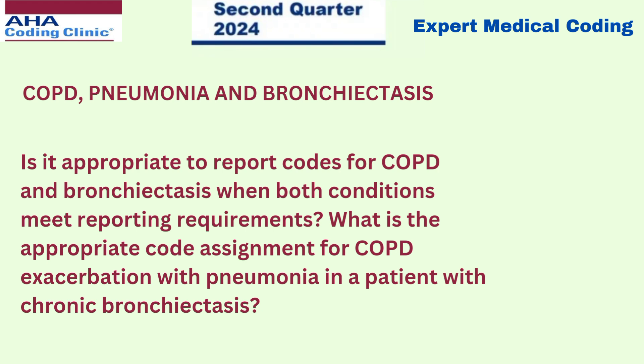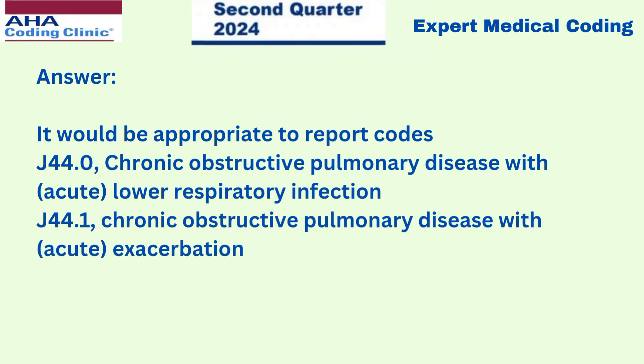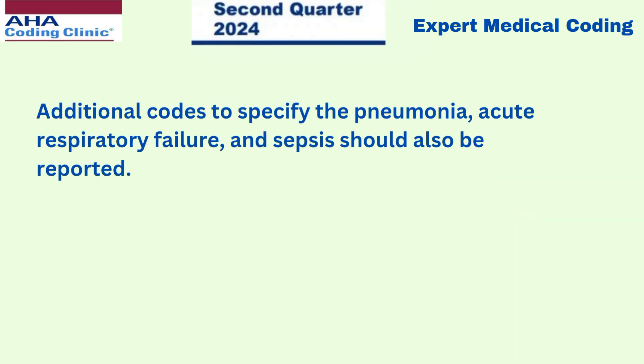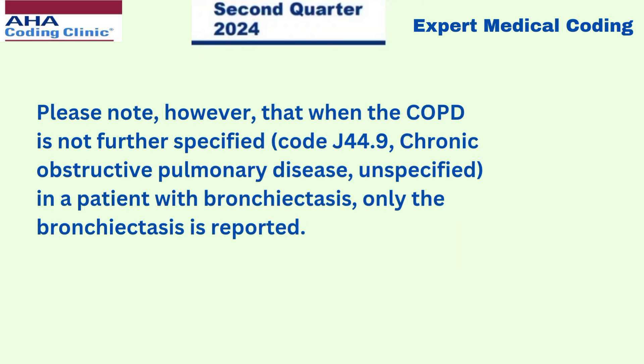The answer is it would be appropriate to report codes J44.0 (chronic obstructive pulmonary disease with lower respiratory infection), J44.1 (chronic obstructive pulmonary disease with exacerbation), and J47.9 (bronchiectasis uncomplicated) for COPD exacerbation with pneumonia and chronic bronchiectasis. Additional codes to specify the pneumonia, acute respiratory failure and sepsis should also be reported. The excludes two note at category J44 supports reporting codes from both J44 and J47 together when conditions meet reporting requirements. Note that when COPD is not further specified in a patient with bronchiectasis, only the bronchiectasis is reported.